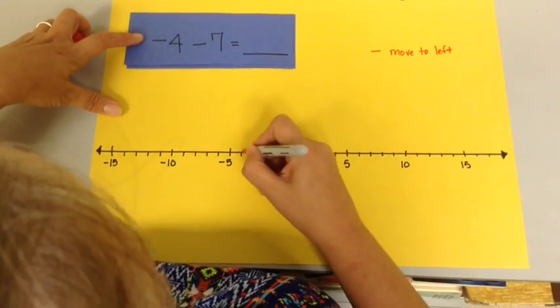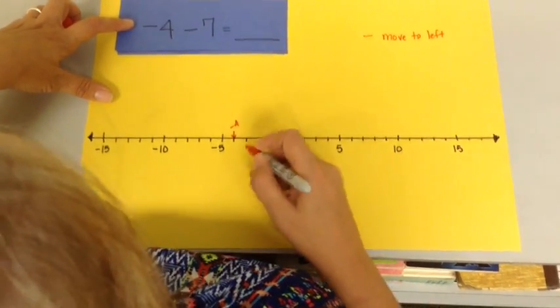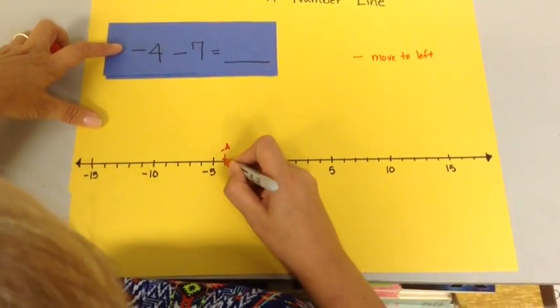So, I'm going to start at negative 4. This is my starting point. And I'm going to move to the left 7 spaces.